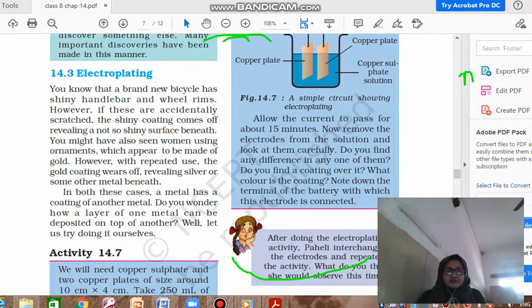So let's learn about it. You know that a brand new bicycle has a shiny handlebar and wheel rims. However, if these are accidentally scratched, the shining coat comes off and it reveals a not so shining surface beneath. When the new one comes to your bicycle, the wheel is very shiny coated, same with the handle. But if scratches come, what you see is what is inside, that is not that shiny.